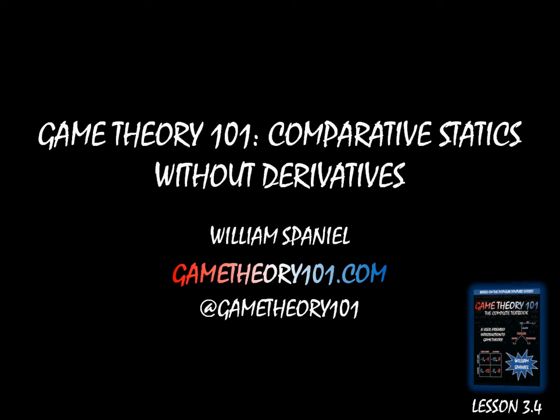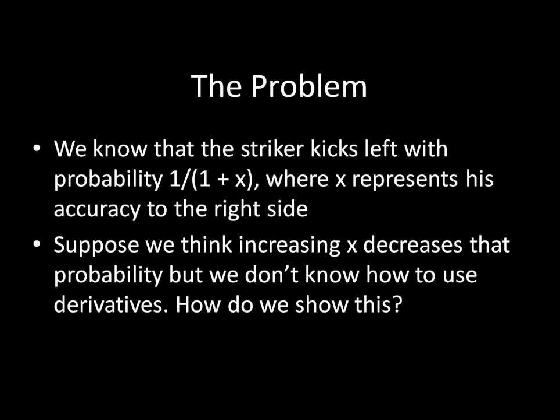If you think back to the last lecture, when we were originally introducing comparative statics, the problem we were looking at is that we had solved a penalty kick game. We know that in equilibrium, the striker kicks to the left with probability 1 over 1 plus x, where x represents his accuracy to the right side. We're curious about what happens to that equilibrium probability as the accuracy changes — as the striker gets more accurate to the right side, what happens to the probability that he kicks left? If we knew how to use derivatives, we could simply use the method from the last lecture. But if we don't, what do we do?